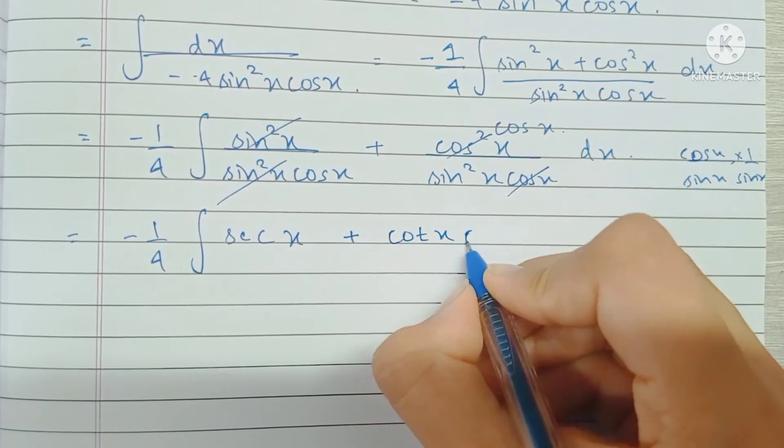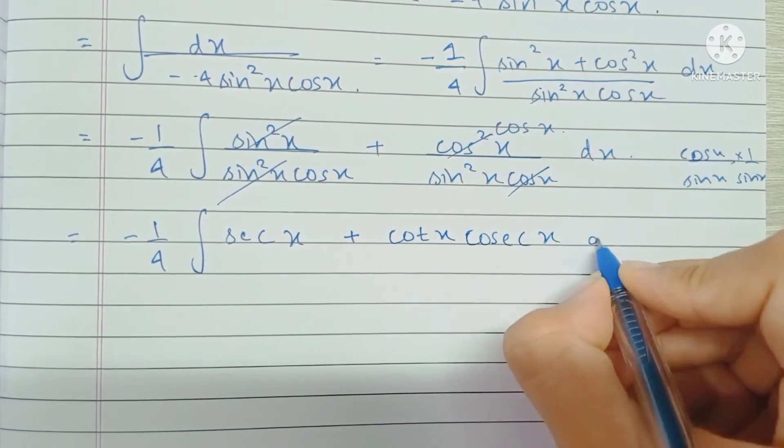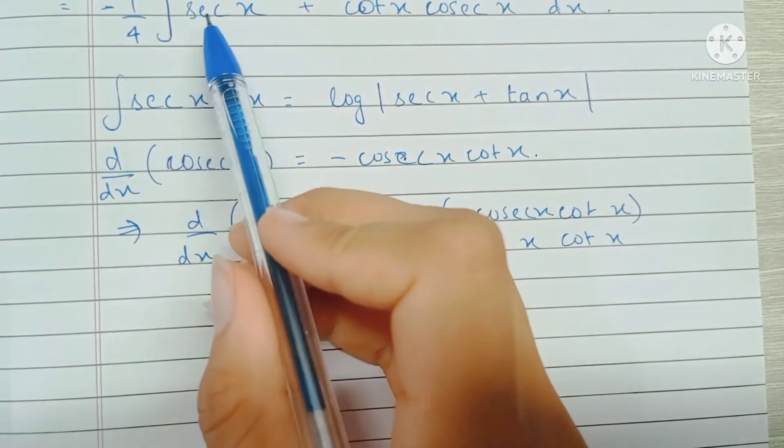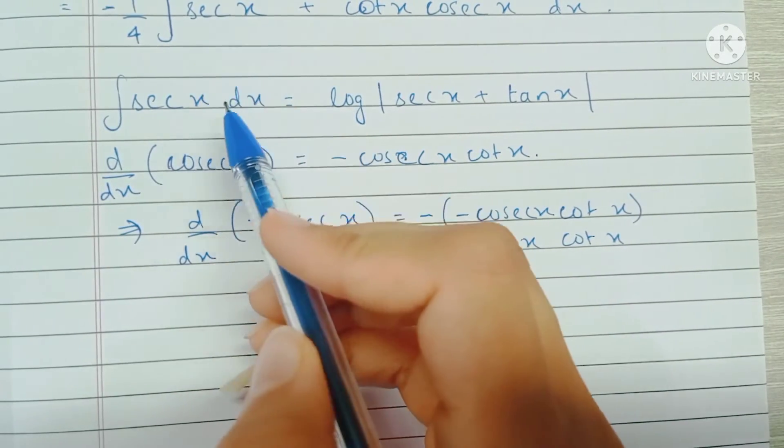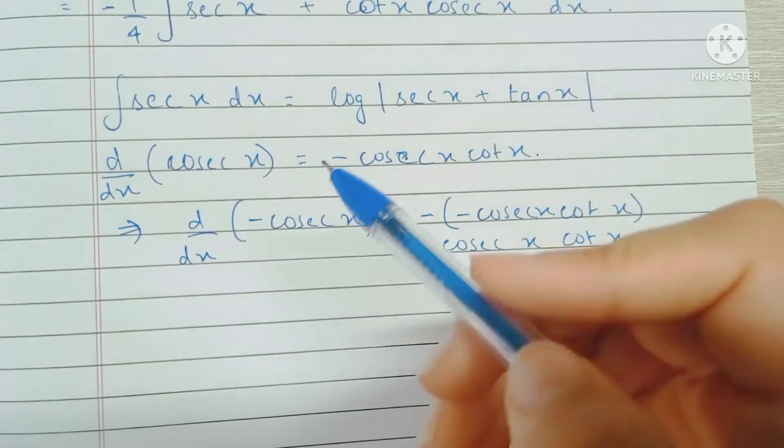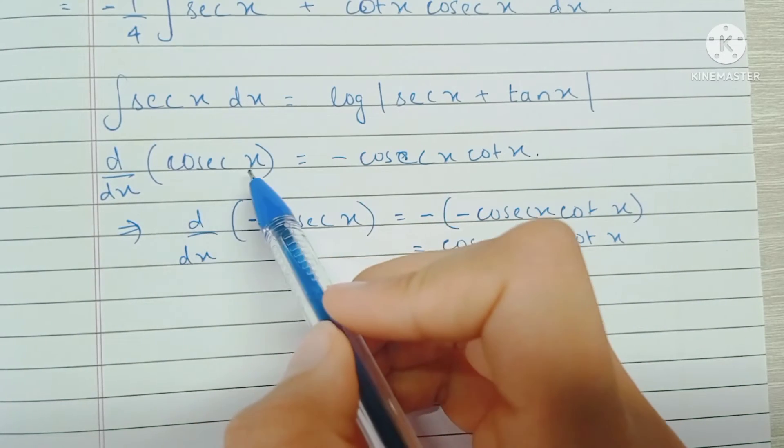Now we know that the integration of sec x is a direct formula, which is log of mod of sec x plus tan x. And since we can see that the differentiation of cosec x is minus cosec x cot x.